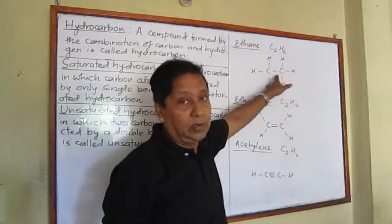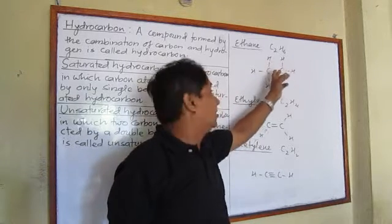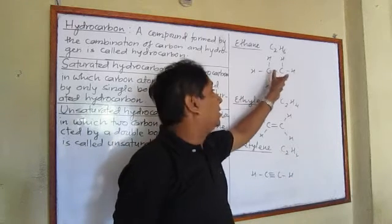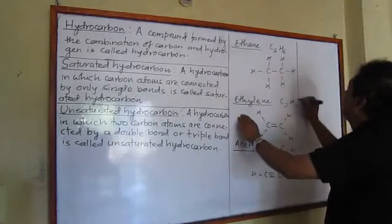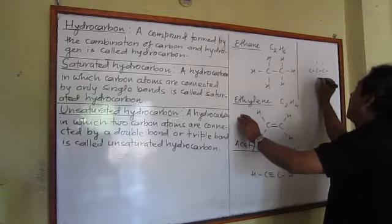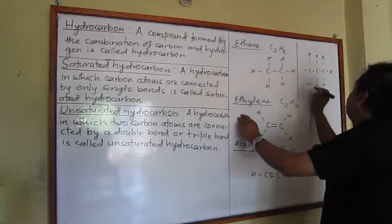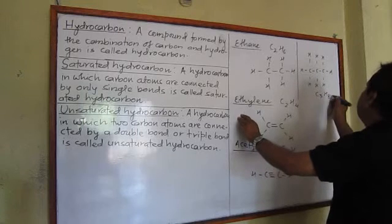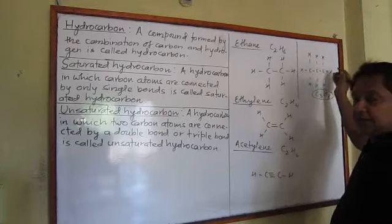Look at this saturated hydrocarbon. Here we have two carbon atoms connected by means of a single bond. A bond is the force with which elements combine to form a compound, and it is represented like this. Two carbon atoms are combined by a single bond, but we may have more than two. For example, three carbon atoms combined with hydrogen form a hydrocarbon with molecular formula C₃H₈.